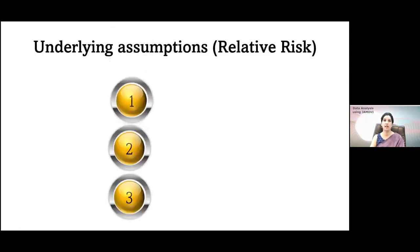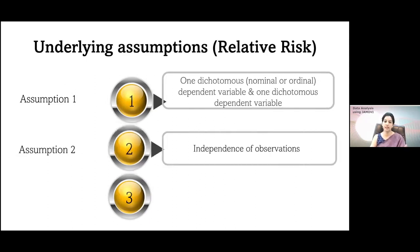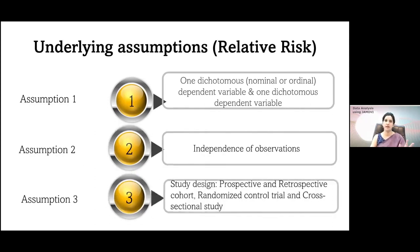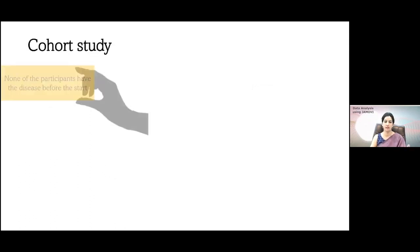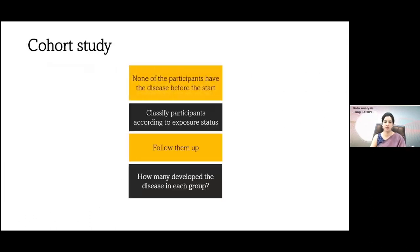What are the underlying assumptions for relative risk? The first assumption is there should be one dichotomous independent variable — which can be nominal or ordinal — and one dichotomous dependent variable. The second assumption is independence of observation. The third assumption relates to study design, which we have already discussed covering cohort studies.